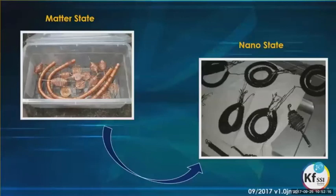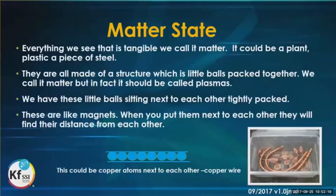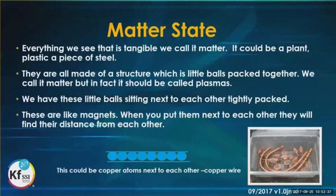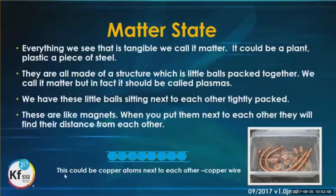Everything that we see that is tangible, we call it meta — whether it was a plant, a piece of plastic, or a piece of steel. They are all made up of a structure which is little balls packed together. We call it meta, but in fact it should be called plasma. These little balls sit next to each other, tightly packed, like magnets — when you put them next to each other they find their distance. That's essentially what our meta-state is, and the picture shows copper atoms sitting next to each other on a copper wire.